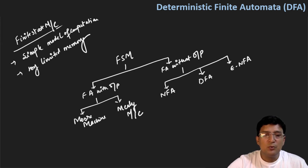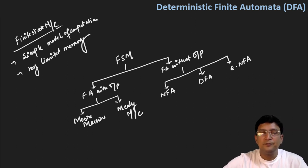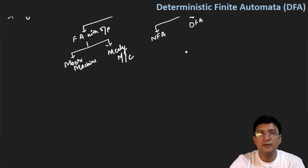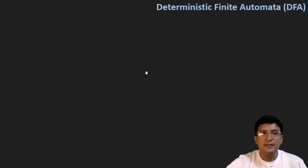In the Moore machine, the output will be associated with the states. And in the Mealy machine, the output will be associated with the transitions. Now let us learn about finite state machines and try to understand them.